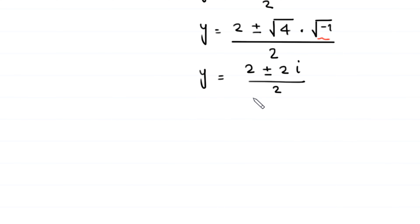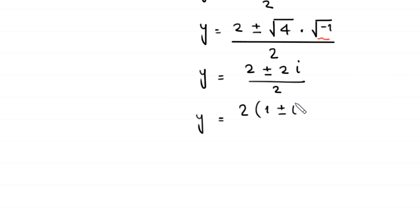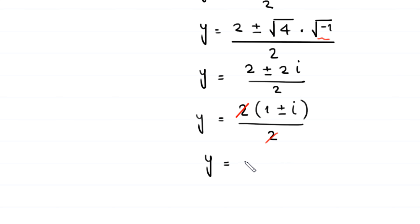Factoring 2 from the numerator: y = 2(1 ± i) / 2 = 1 ± i. So the three values of y are: y = 1 and y = 1 ± i.